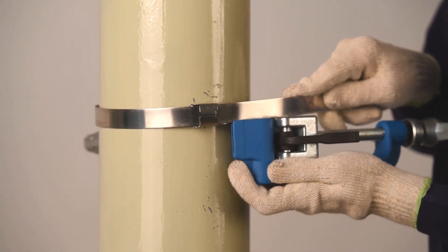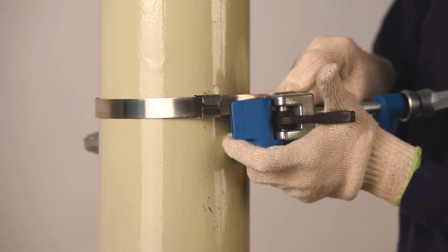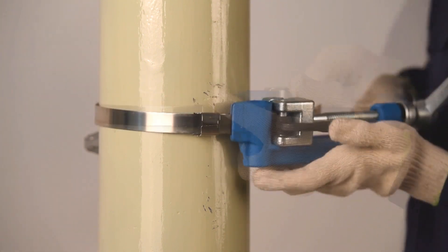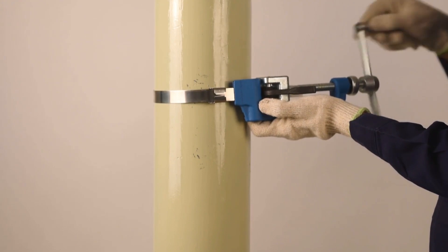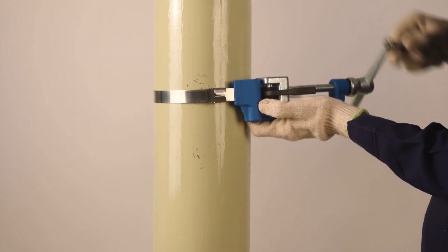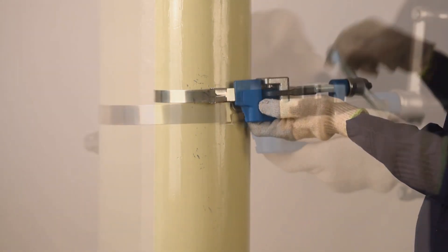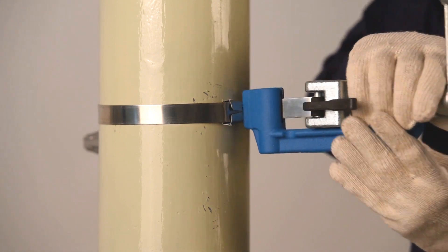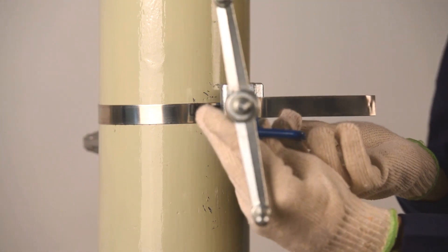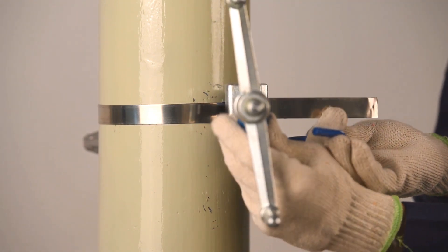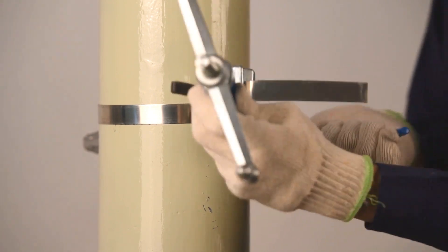Locate the other open end of the strap into the strap binding tool and lock the tool. Tension the strap by rotating the handle of the strap binding tool. Cut the additional strap using the cutting edge of the tensioning tool and reverse fold the end of it.